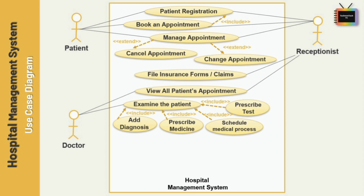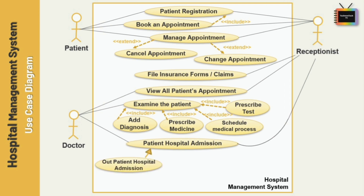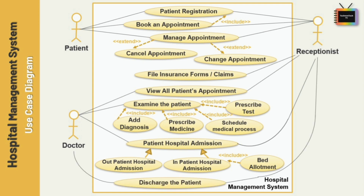Next, doctor and receptionist handle patient hospital admission. For the hospital admission use case, I am adding generalization. Generalization is a relationship from a child use case to a parent use case, specifying how a child can specialize all behavior described for the parent. Patient admission can be of two types: outpatient hospital admission or inpatient hospital admission. For inpatient hospital admission, we have to allot a bed to the patient.